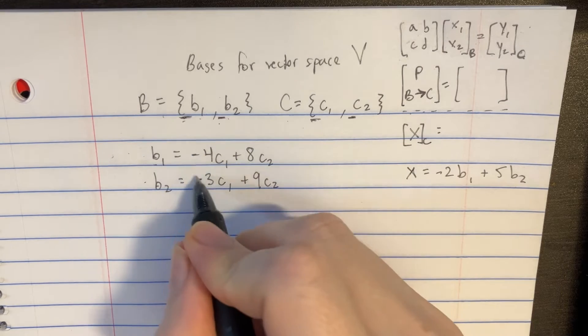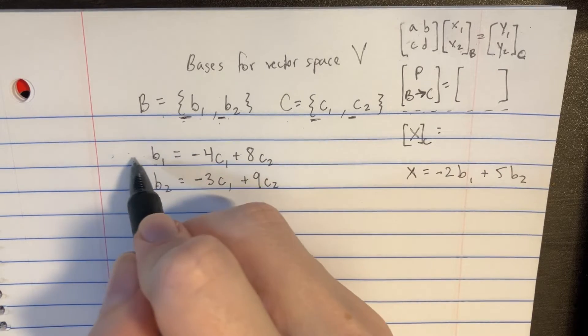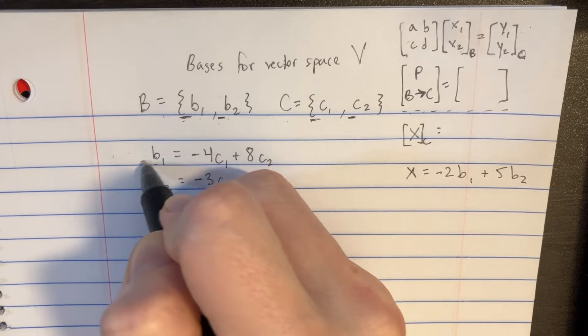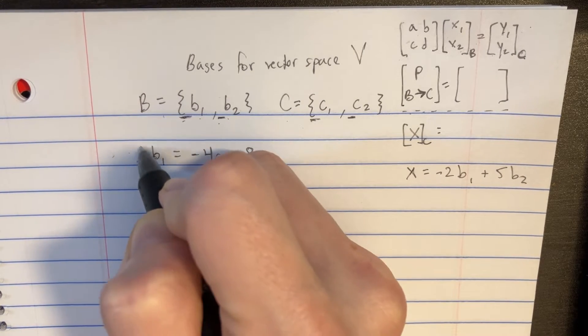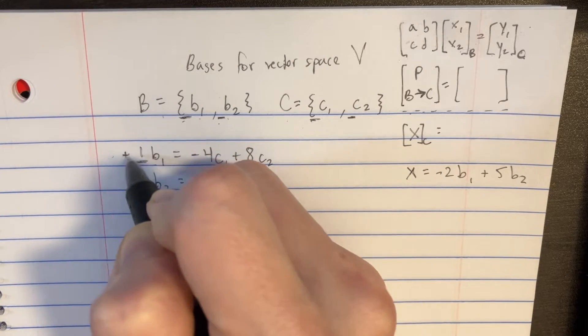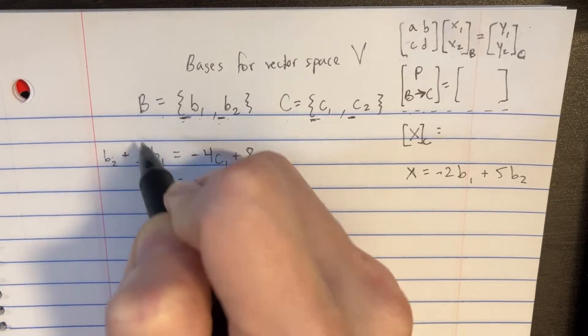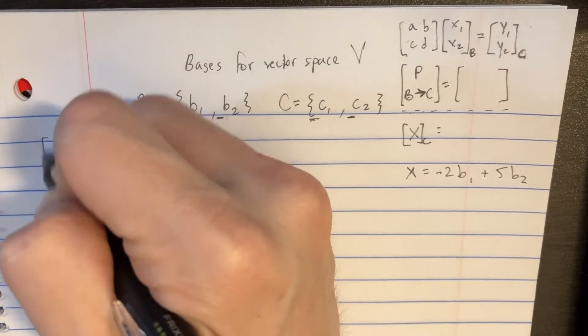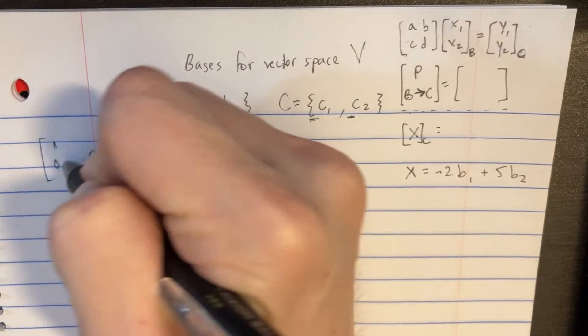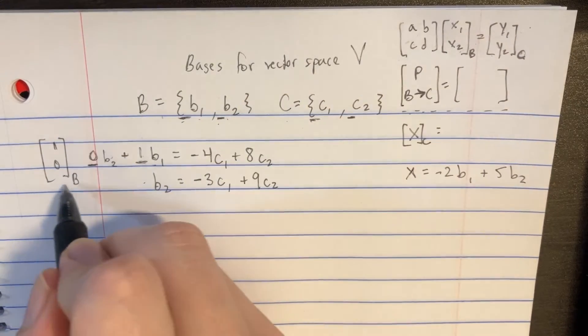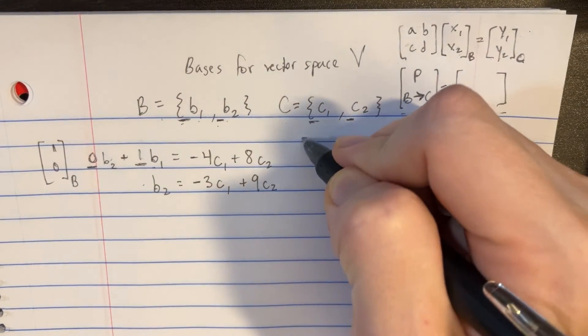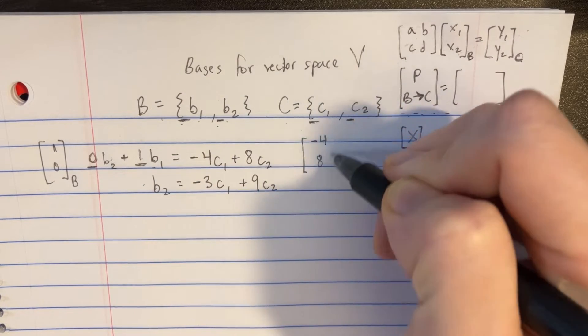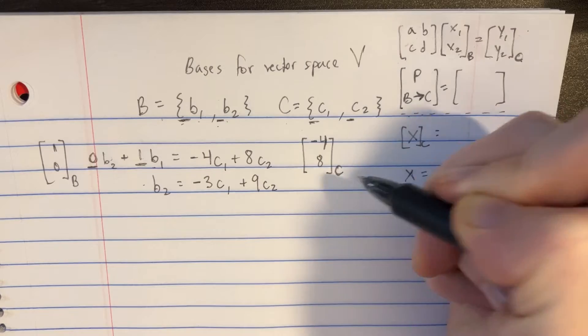Let's use these two equations that are given to us to figure this out. They're saying that this side is equal to this side. So let's realize that we have one of these B1 vectors here. And if we were to throw in the B2s, we would need zero of those. So we have this coordinate vector on this side that's like 1, 0. This is using the basis vectors from B. And that's equal to this thing over here, which would be like negative 4 and 8 using the C basis vectors.